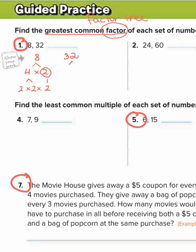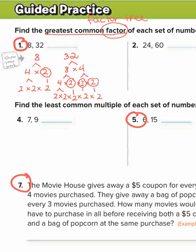Now we're going to break up 32 — you can start with any number. I'm going to do 8 times 4. 8 can be broken up as 4 times 2; that 2 is prime. 4 still has to be broken up as 2 times 2; I'll bring down that 2. And I also have to break up my other 4 as 2 times 2 — those are both prime, so I'll bring them down. This is the prime factorization of 8 and 32.